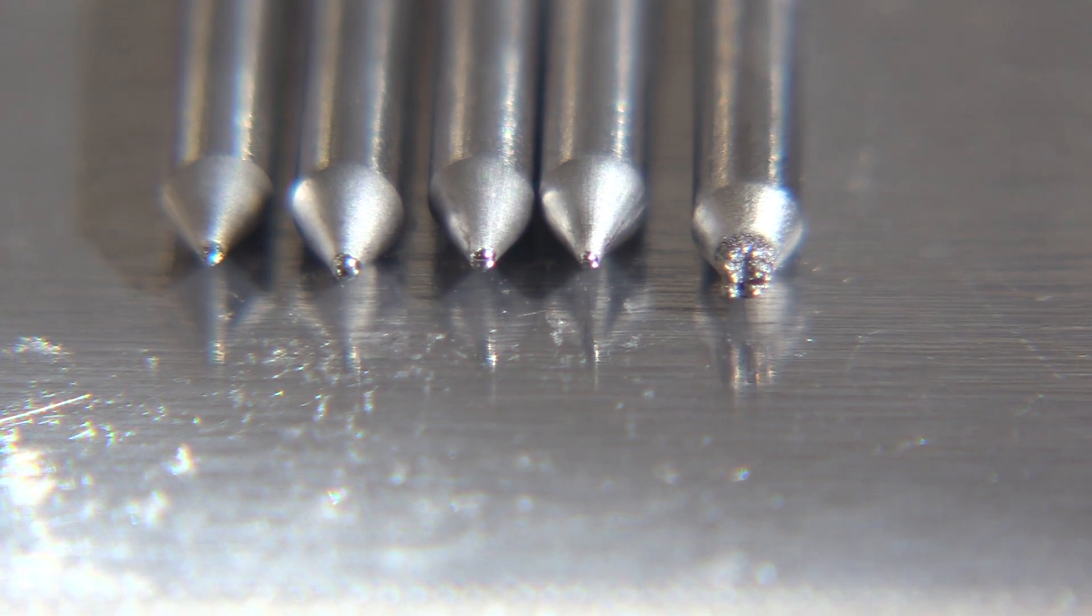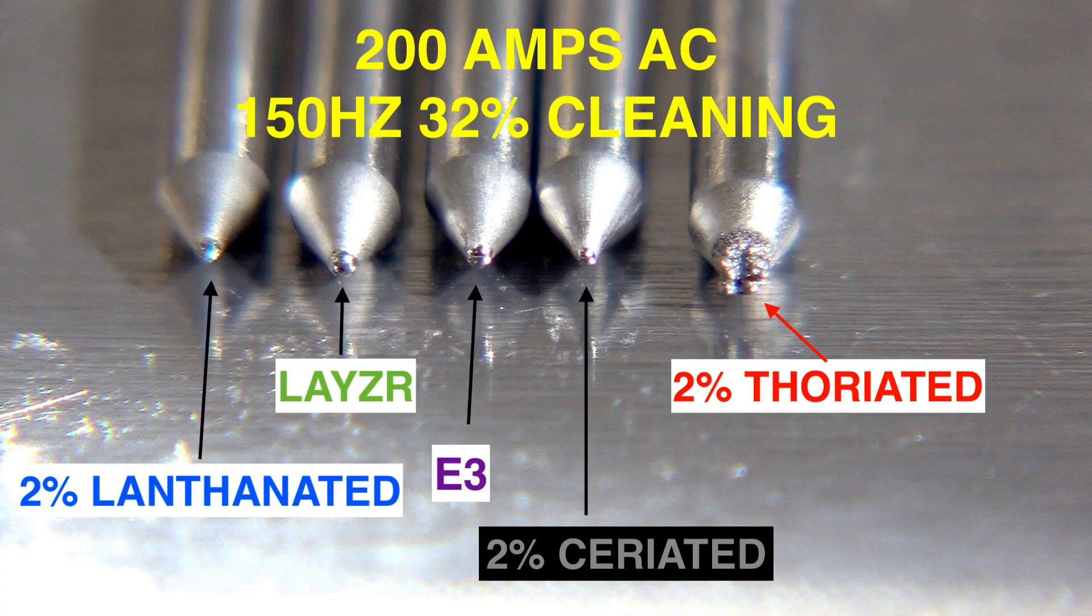One of these does not look like the other but the other four barely rounded, maintained their shape at 200 amps on AC. I think we can all agree from that little down and dirty test the 2% thoriated got those little nodules on the tip and sometimes those things can spit into the puddle or create an erratic arc.